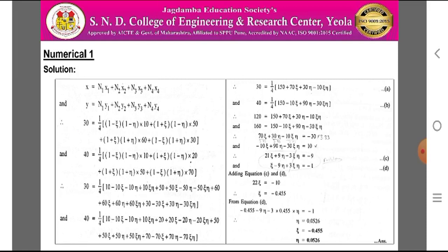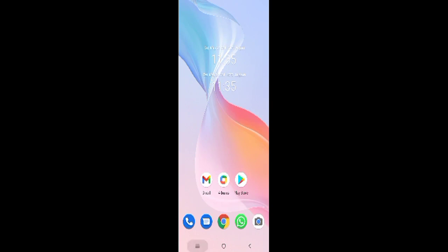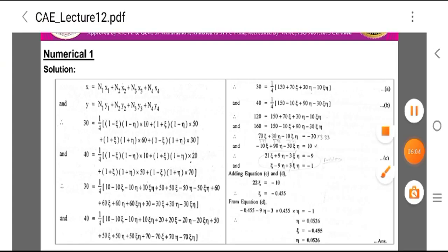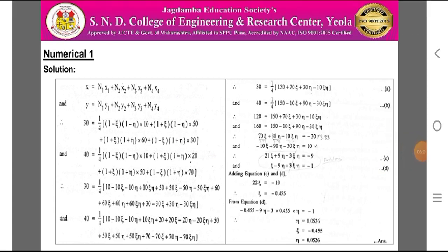Therefore: 120 = 150 + 70·epsilon + 30·eta − 10·epsilon·eta and 160 = 150 − 10·epsilon + 19·eta − 30·epsilon·eta. Simplifying: 70·epsilon + 30·eta − 10·epsilon·eta = −30 and −10·epsilon + 19·eta − 30·epsilon·eta = 10. Further reducing: 21·epsilon + 9·eta − 3·epsilon·eta = −9 (equation C) and epsilon − 9·eta + 3·epsilon·eta = −1 (equation D).